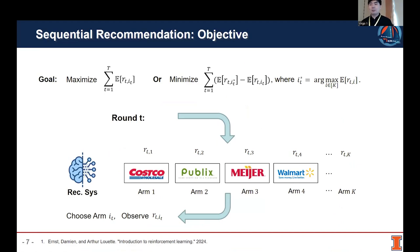So the goal of sequential decision-making in sequential recommendation is to maximize the expected cumulative reward. In other words, we want to select the arm with the maximum expected reward. Alternatively, we aim to minimize the cumulative regret, which is the expected difference between the maximum reward and the received reward.